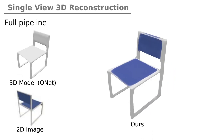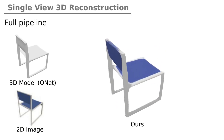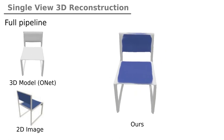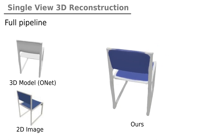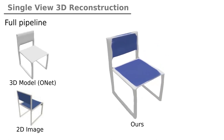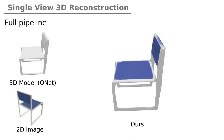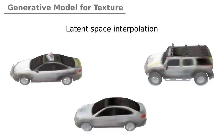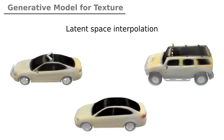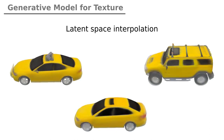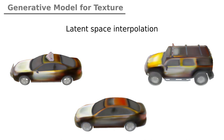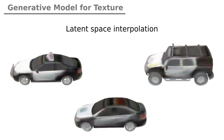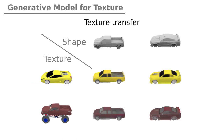We combined texture fields with the shape reconstruction method of occupancy networks and built a full pipeline for 3D reconstruction of shape and texture. Our generative model is also trained on ShapeNet data. Here are some interpolations in the latent space. For all three models, the texture is generated from the same latent code. Our generative setup can also be used for transferring texture from one model to another.